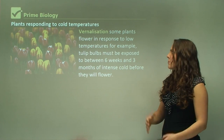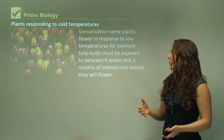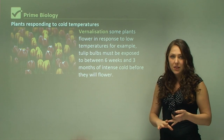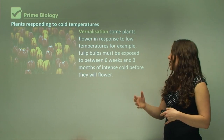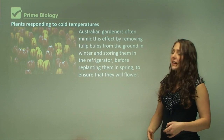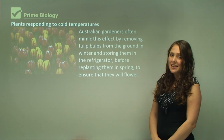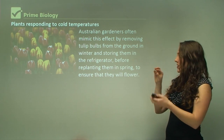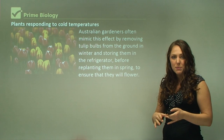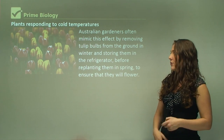Vernalization: some plants flower in response to low temperatures. For example, tulip bulbs must be exposed to between 6 weeks and 3 months of extremely cold temperatures to flower. Australian gardeners often mimic this effect by putting the seeds into the refrigerator for the 6-week to 3-month period to make sure that in spring they will actually flower.